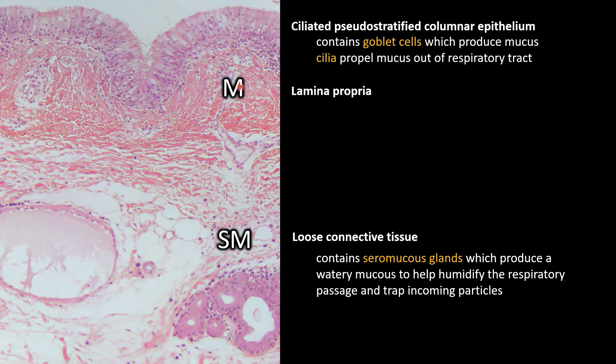The lamina propria, underneath the epithelium, is a connective tissue that's rich in elastic fibers. When you breathe in, your airway expands a little bit; when you exhale, those elastic fibers recoil and assist with exhalation by making your airway smaller.